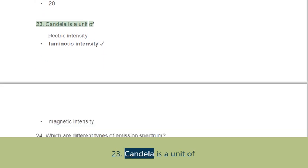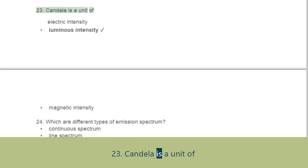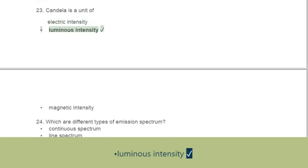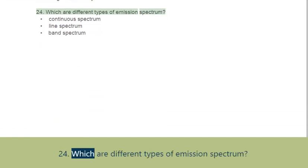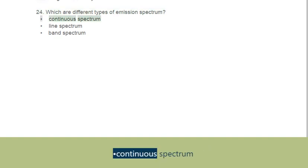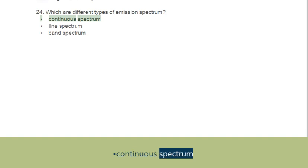Question 23: Candela is a unit of. Options: A. Electric intensity, B. Luminous intensity, C. Magnetic intensity. Question 24: Which are different types of emission spectrum? Options: A. Continuous spectrum, B. Line spectrum, C. Band spectrum.